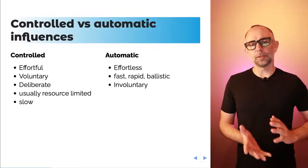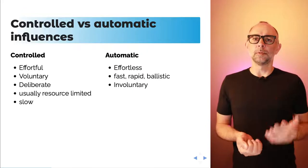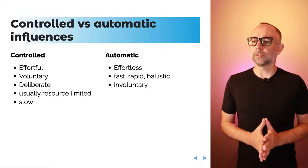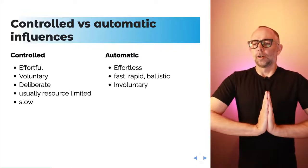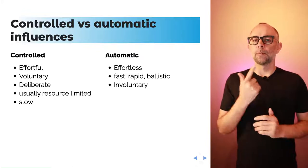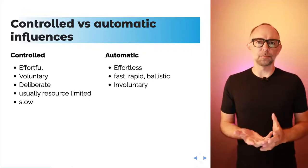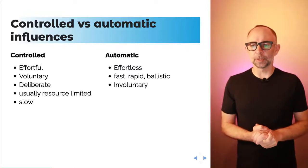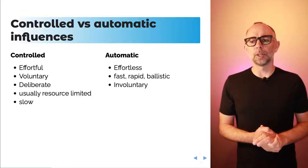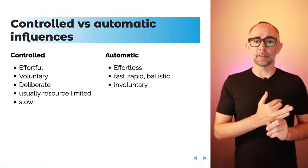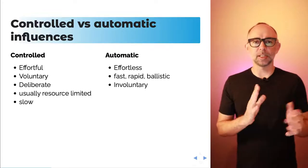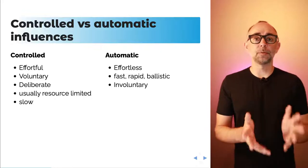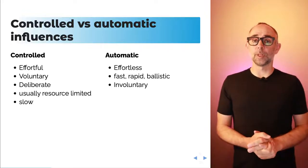This is related to a distinction between controlled versus automatic influences that we've been talking about throughout the semester. Controlled influences are usually considered ones that are effortful, voluntary, deliberate, they're usually resource limited, and they can be a little bit slow compared to automatic influences, which are generally effortless, they're fast, rapid, kind of like ballistic, like a reflex, and they might even be involuntary. You might be able to do some of these automatic things without even thinking about them, or intending to do those things.